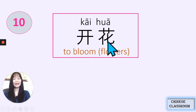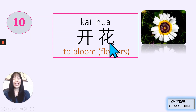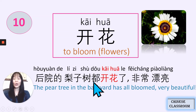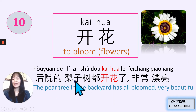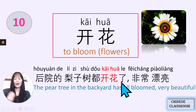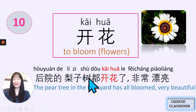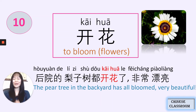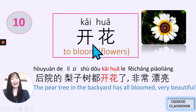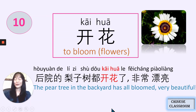The last one: 开花, 开花. 花 means flowers. So 开花 means to bloom. 后院的梨子树都开花了, 非常漂亮. 非常漂亮 — very beautiful. 后院 — backyard. 梨子树 — pear tree. 后院的梨子树 — the pear tree in the backyard. 开花 — has bloomed.